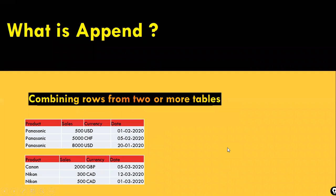To start with, let us understand what Append is — combining rows from two or more tables. Sometimes the data will be available on a daily basis in a separate file. Every day, sales data will be in a separate file. Every week, you need to combine all the last seven days' files into a single file. With that combined weekly data, you need to create some report. You'll be using Append more frequently in real time.